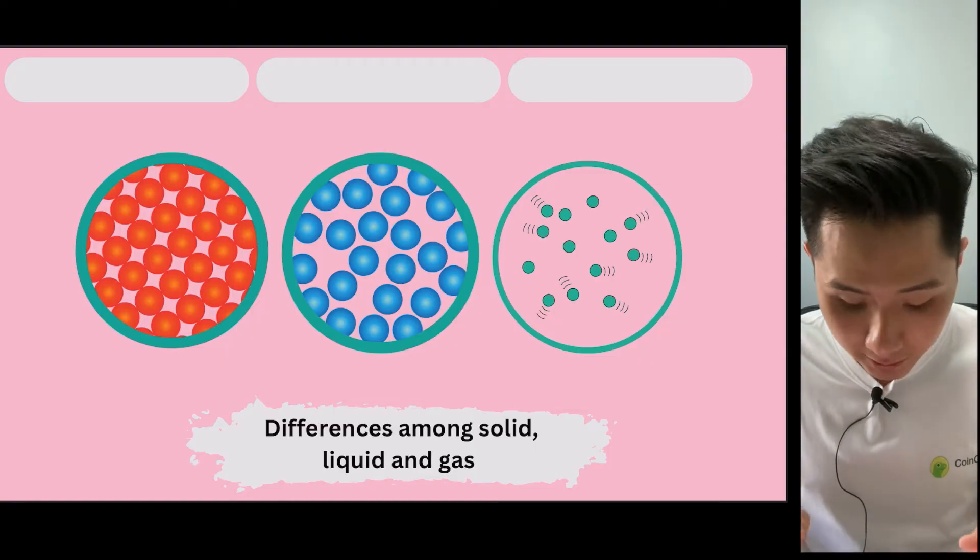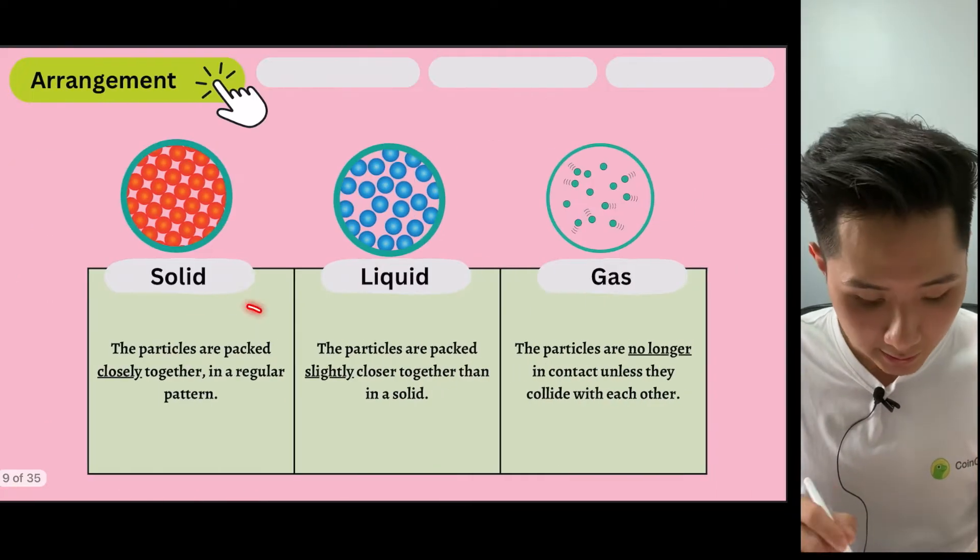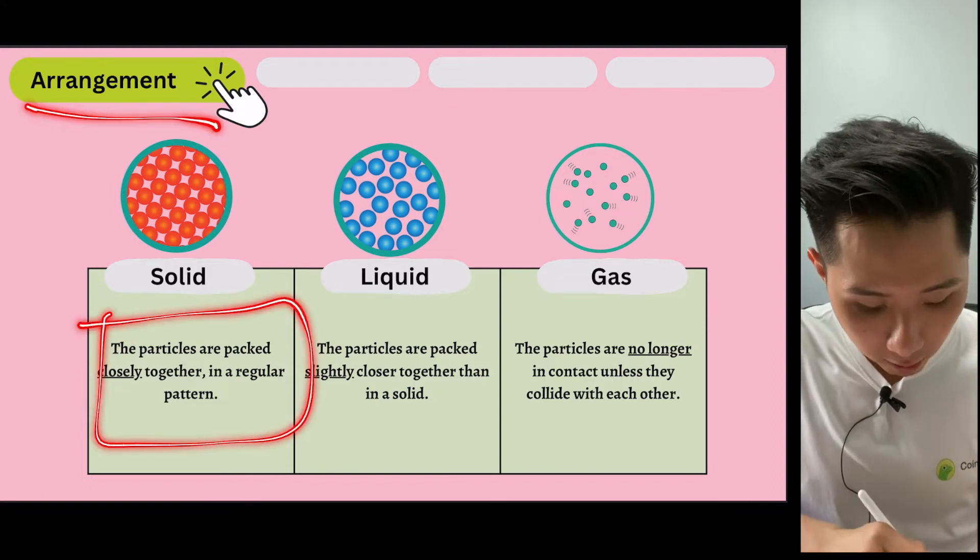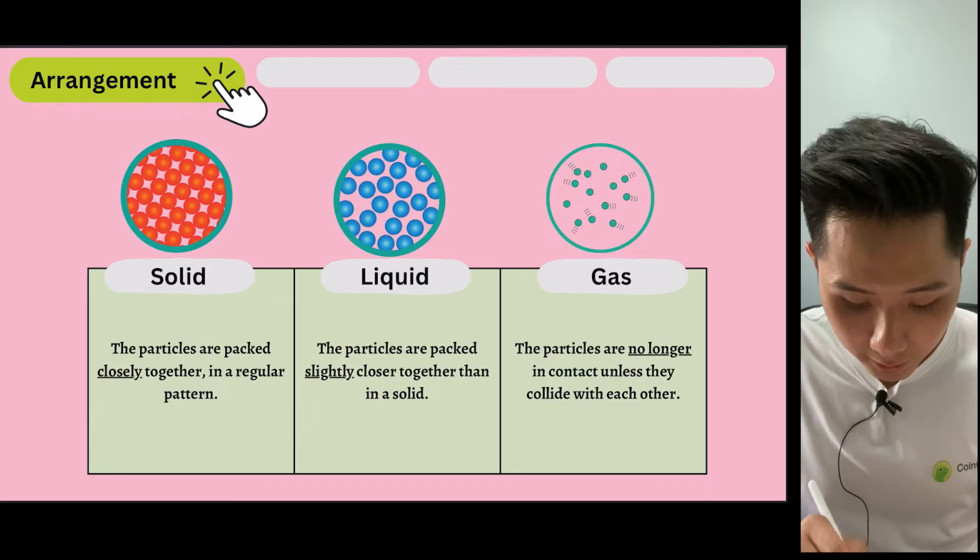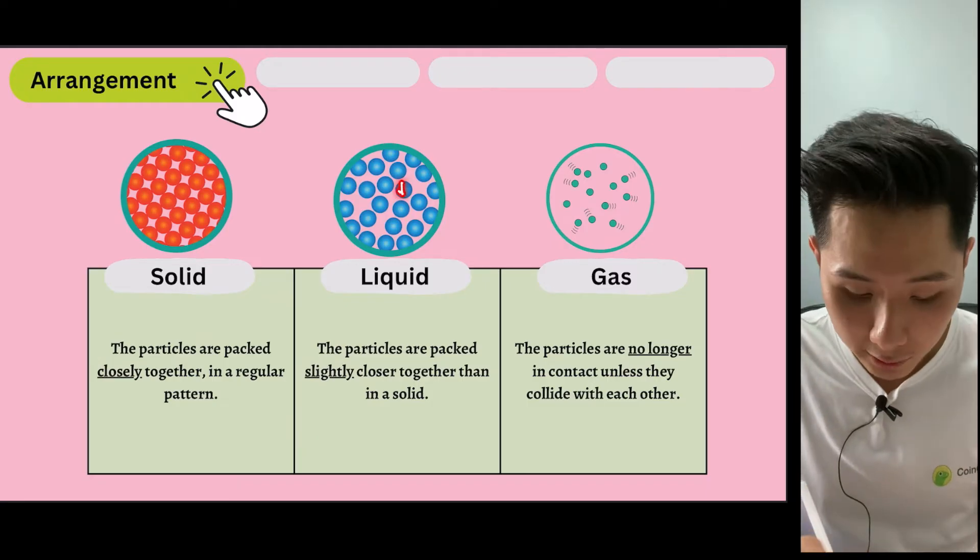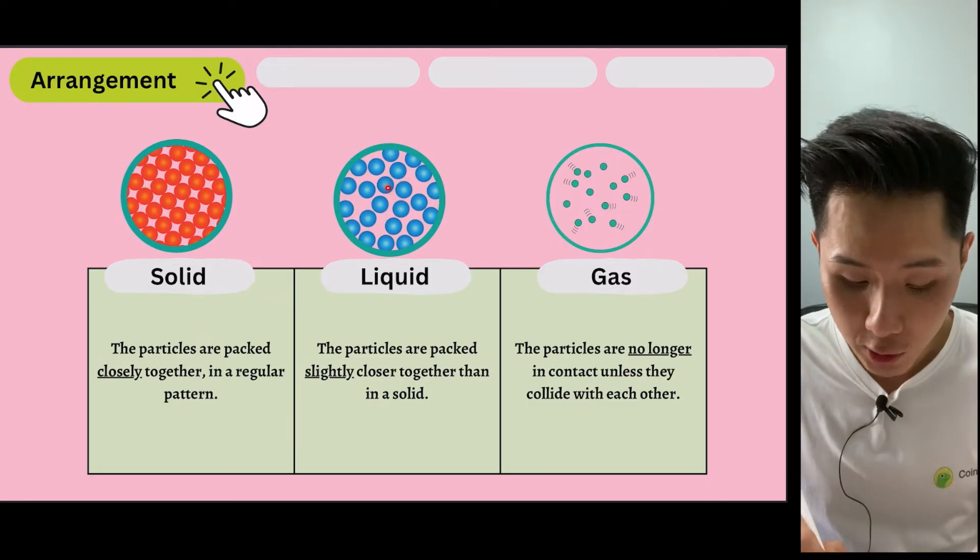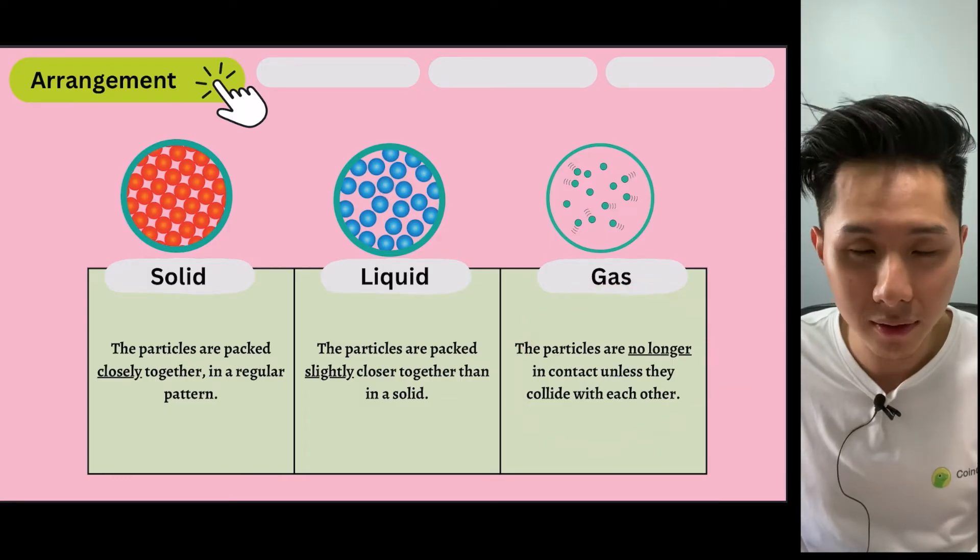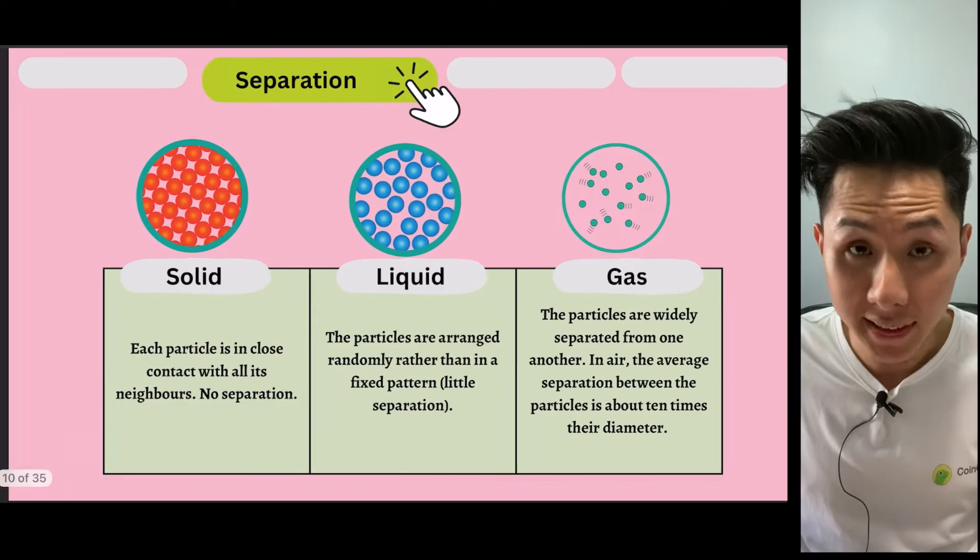So let's look into more differences between solid, liquid, and gas. For the arrangement of solid, they are closely packed. Whereas liquid, you can see that even though they are quite close to each other, they are not really in a regular shape. Whereas gas, they are not in contact at all. And that's the arrangement.